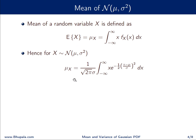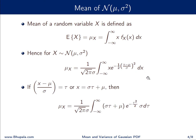For the given Gaussian random variable, the mean is: μ_X = (1 / (√(2π) σ)) × ∫_{−∞}^{∞} x · exp(−(1/2) × ((x − μ)/σ)²) dx. Now, we perform a change of variable: let τ = (x − μ)/σ, so that x = στ + μ.